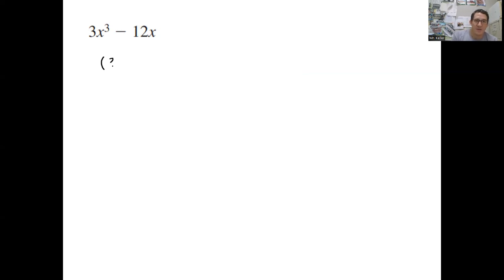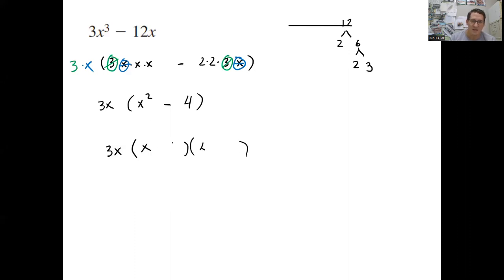So this one here, it's 3x cubed. So 3 times x times x looking for the GCF. 12, this is going to be 2 times 6 and 6 is 2 times 3. That's 2 times 2 times 3 times x. Look for what they have in common. A lot of you might be able to do this in your head. You can see that's 3x. That is great if you can do that. If not, this doesn't take that long. So then what would be left would be 3x times x squared minus 4. Look at that, we have that same difference of squares. x squared minus 4. That's going to be x plus or minus square root of 4 is 2. So then we are done with that one.